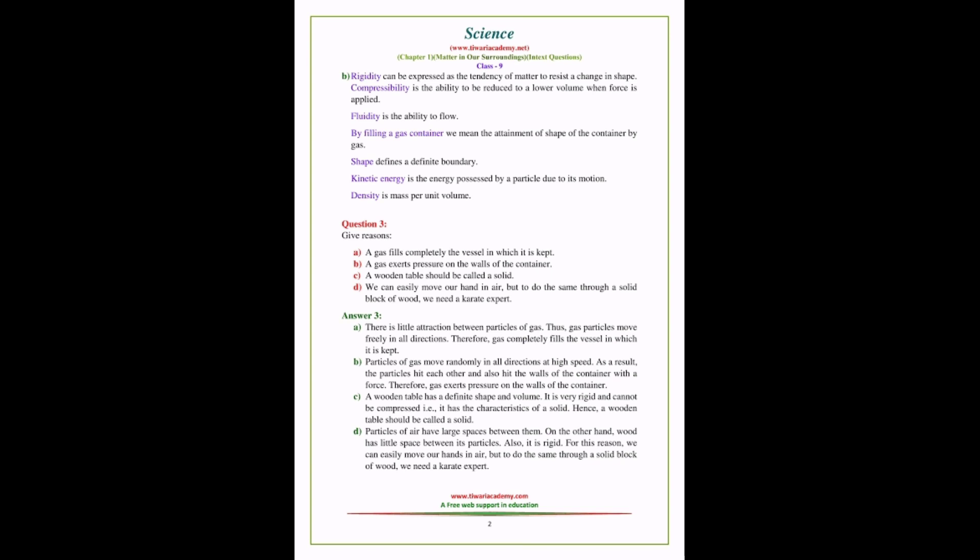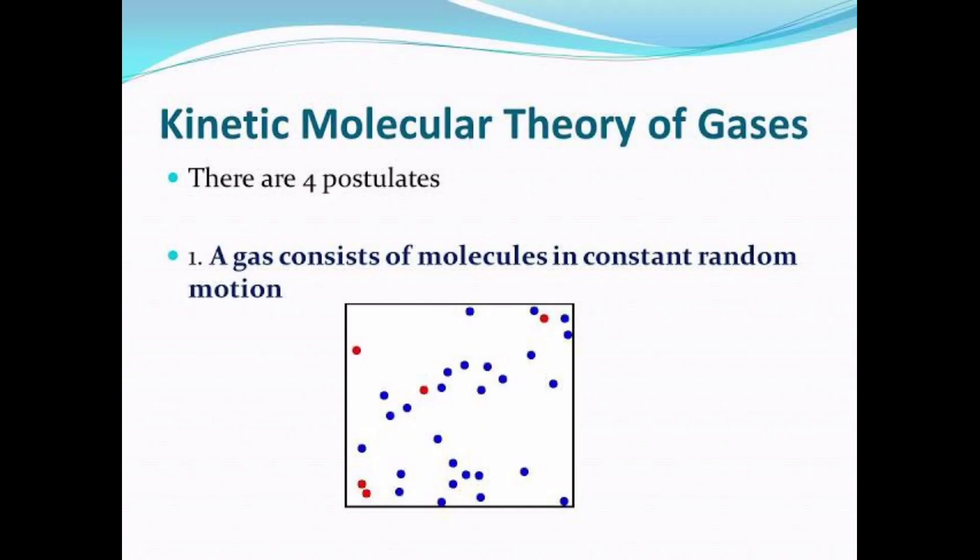Second question: due to the kinetic energy of the gas particles, they exert pressure on the container. Third one: a wooden table has definite shape and volume, it is very rigid, cannot be compressed. Therefore, we can consider the wood as solid. And particles of air are very far apart so we can move very easily, but whereas wood, it is very difficult to pass through. Next question.